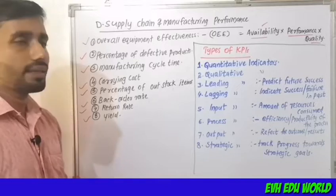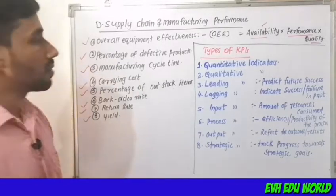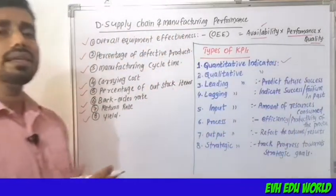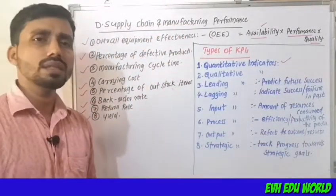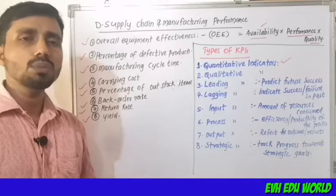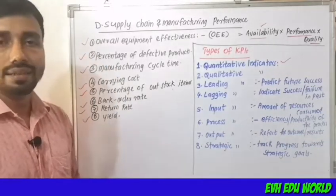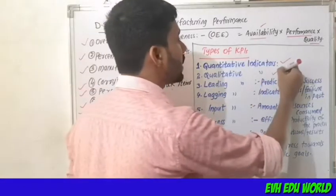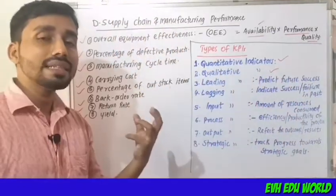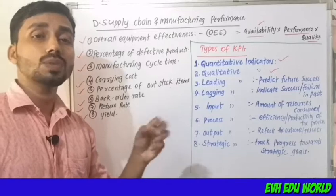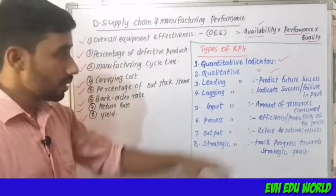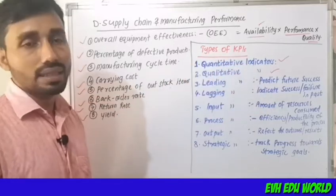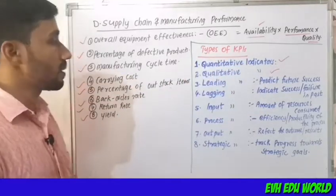Now discussing the types of Key Performance Indicators. The first type is quantitative indicators — these can be expressed in terms of numbers. The second type is qualitative indicators — these cannot be expressed in terms of numbers.